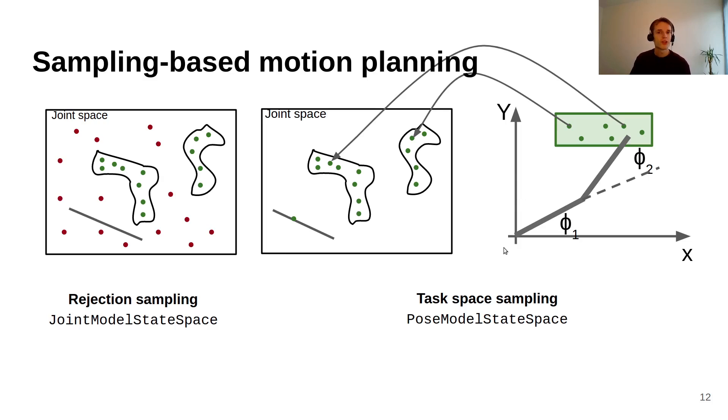The other planner, the pose model state space, plans mainly in Cartesian space and then we can solve these problems. For example, instead of generating samples in joint space we can generate samples in Cartesian space and try to find a path here. But then we have to convert it back to joint space to get a path that we can execute on the robot. This is where the joint space jumps occur sometimes. If we move from this point to this point in Cartesian space it looks fine, but in joint space it could be that we go through an infeasible region and then we get this flip of the robot that's not executable.